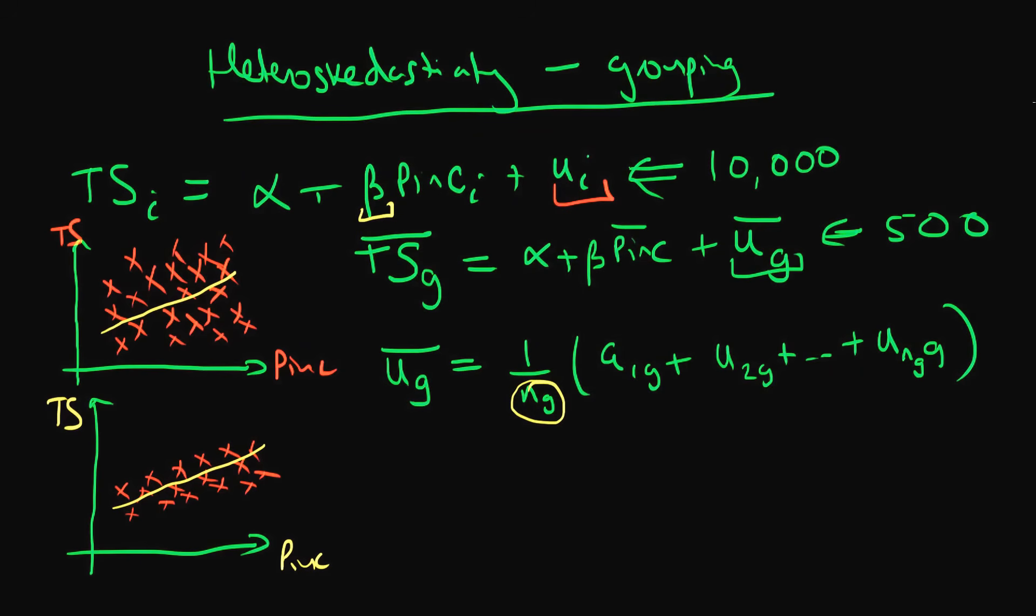So if we think about another group, all the individuals in group F, well the average error of individuals in group F is one over the number of individuals in group F times the linear sum of all the errors of individuals within that group F. So we continue all the way up to U_nf_F.